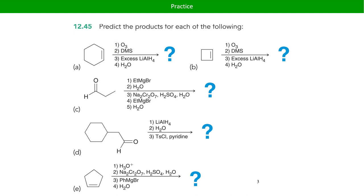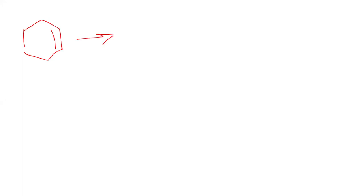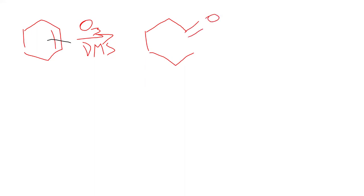For this first one we have cyclohexene, followed by ozonolysis and DMS. Remember: ozonolysis — the first step makes that ozonide where you wind up with that kind of weird peroxide-epoxide structure, and then the DMS reduces that a little bit, and we wind up splitting the alkene and turning it into carbonyls. Where we had the alkene bond, we now have two aldehydes.